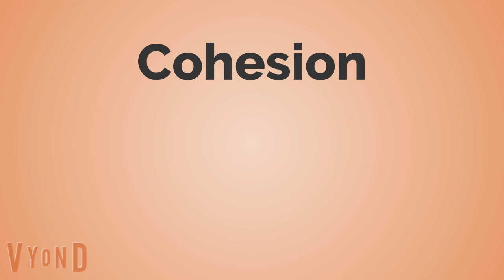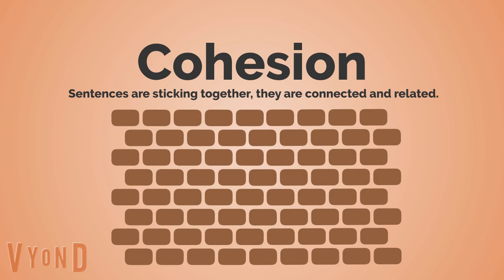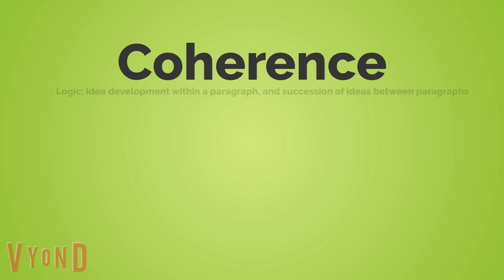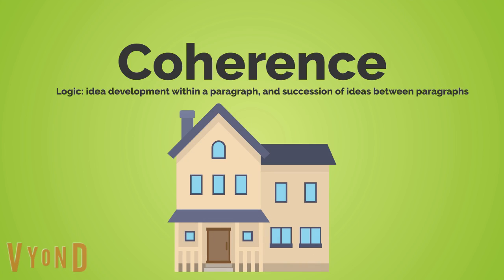And this is where cohesion comes in. Cohesion means that the sentences are sticking together — that they are connected and related. So now we're on the middle scale, connecting some well-made bricks. Finally, on the large scale, we have coherence, which is essentially logic: idea development within a paragraph, and succession of ideas between paragraphs. This is how meaning is achieved — it happens on all three levels simultaneously.